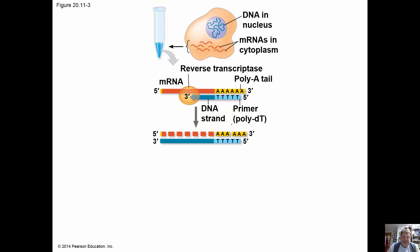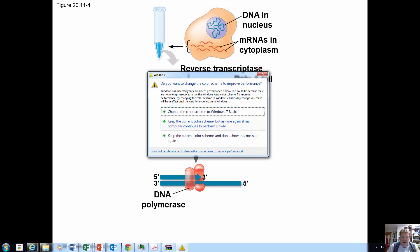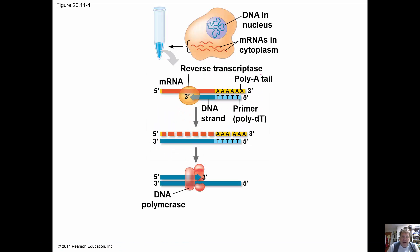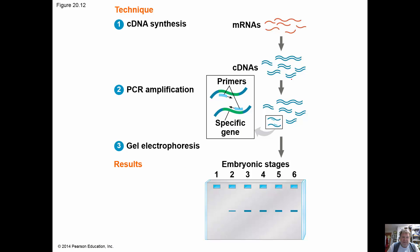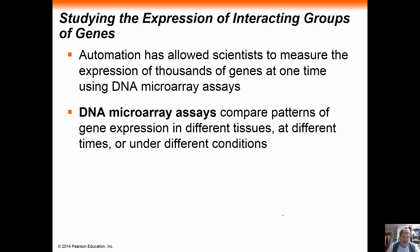Reverse transcriptase allows us to use certain techniques to amplify a piece of messenger RNA. We can look at embryonic stages to see where certain pieces of DNA are being made — maybe in an egg it isn't being made, but as the organism matures we see more and more expression of that piece of DNA.